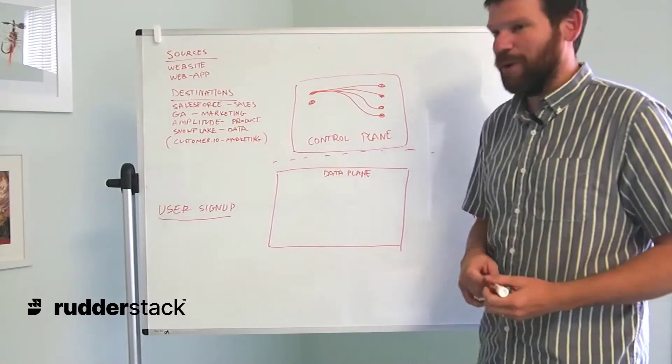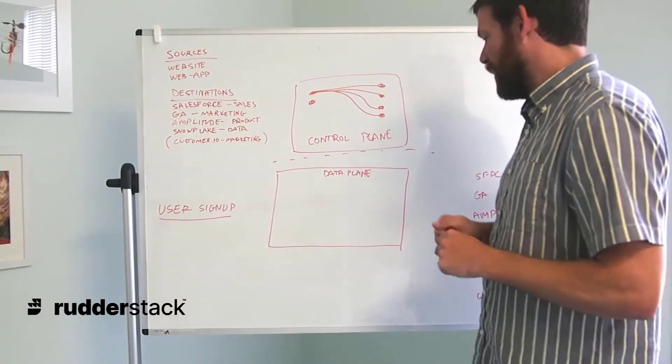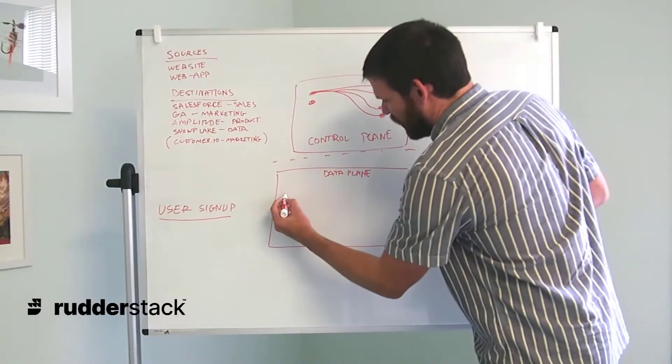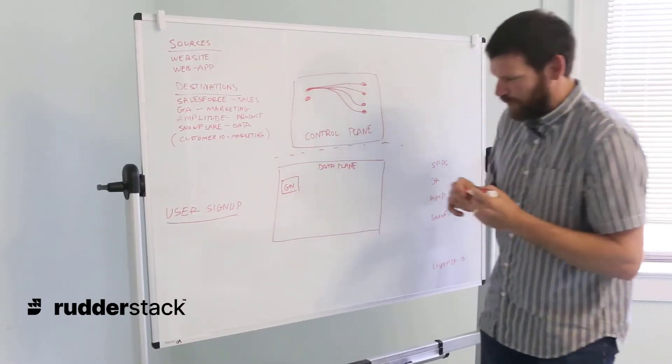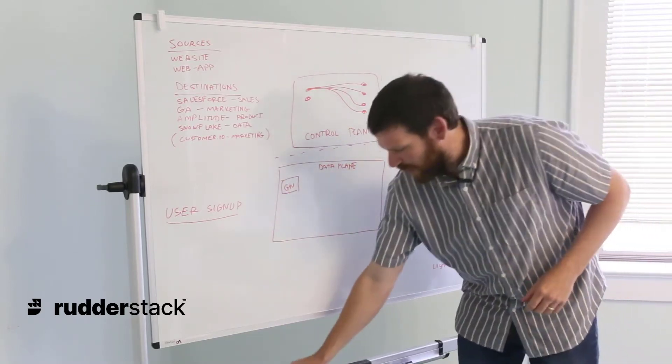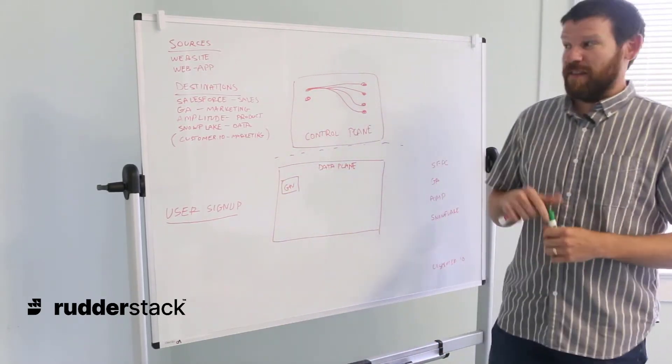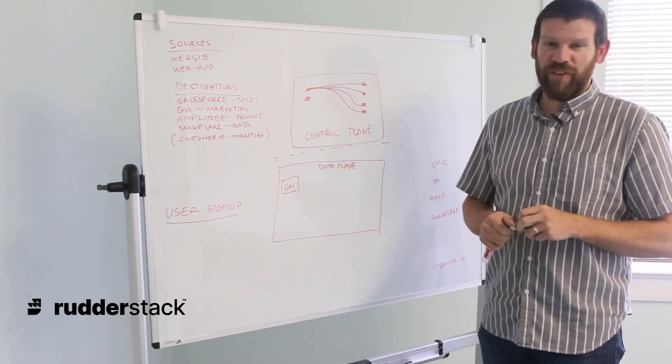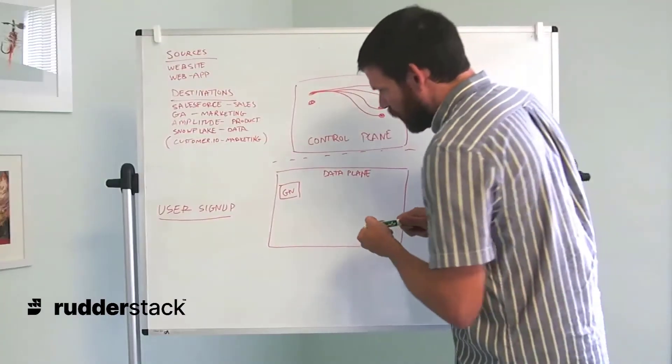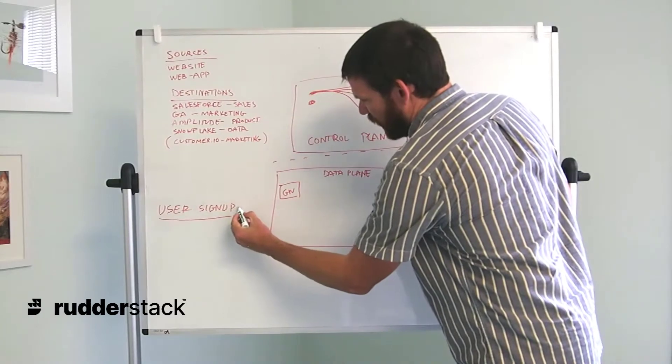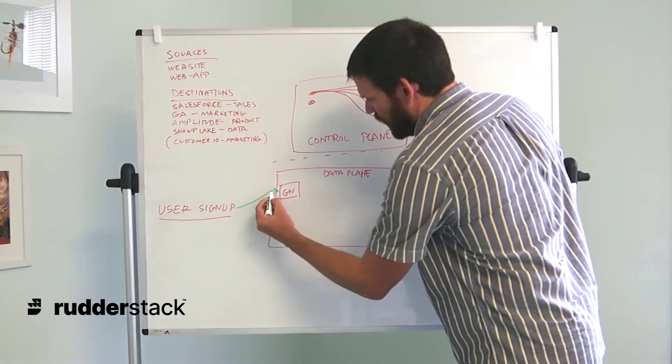Within the data plane, we're going to have a number of services. The primary service that's going to handle the ingestion of events is called the gateway. The gateway is essentially receiving the events as they come in from the SDKs, the HTTP sources, or any of our other cloud or cloud extractor warehouse sources. This event that we're sending on the front end of the user signed up is going to come into the gateway.